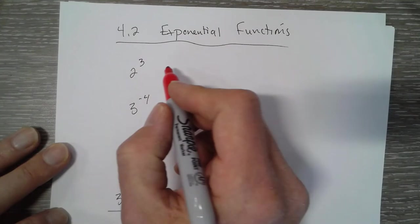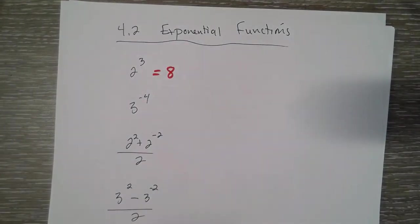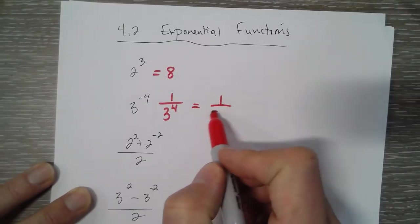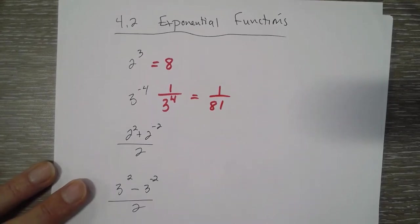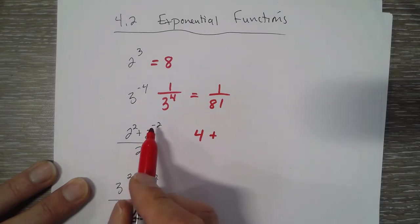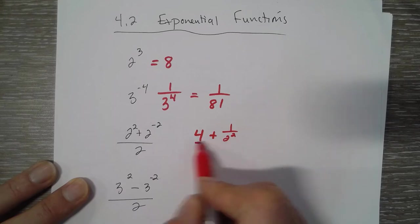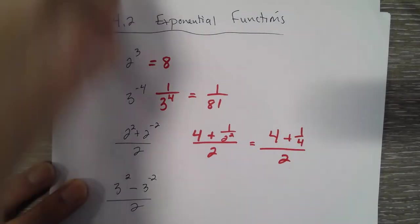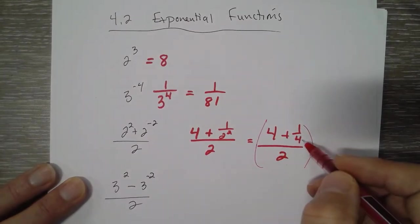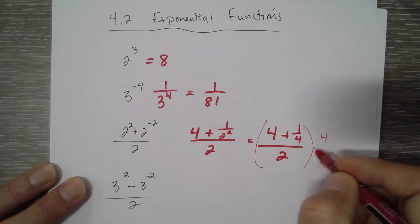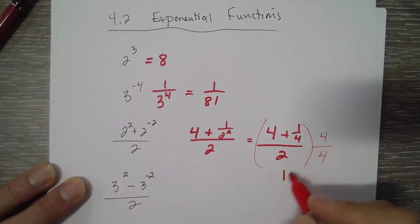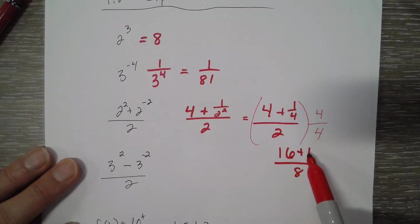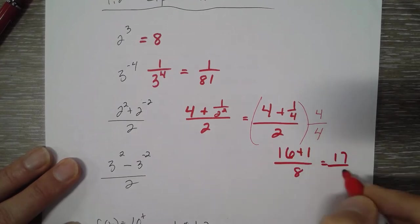You need to know the laws of exponents — what do we do with negatives, with fractions. So 2 cubed is 8. 3 to the negative 4 is the same as 1 over 3 to the 4th, and 3 to the 4th is 81, so it's 1 over 81. 2 squared is 4 plus 2 to the negative 2, which is 1 over 4, giving us 4 and 1/4 over 2. Multiplying top and bottom by 4 gives us 16 plus 1 on top over 8 on the bottom, which is 17/8.